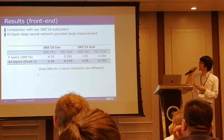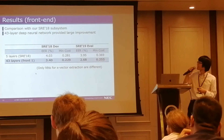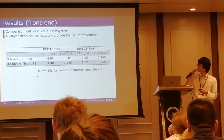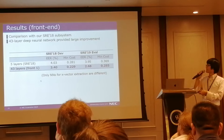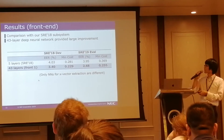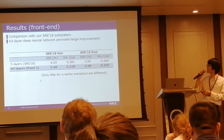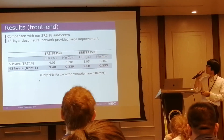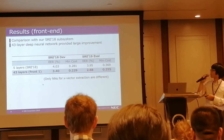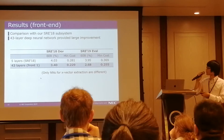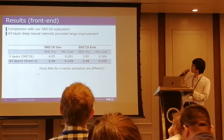Let's go to results. This table shows the effectiveness of the very deep neural network. The first line uses only a five-layer TDNN from last year's submission, and this line is this year's submission using 43 layers. This deep neural network provides a large improvement, as you can see in the table. This is a very important result.